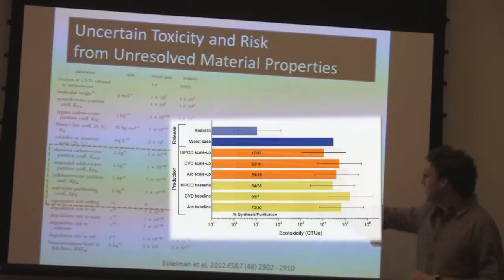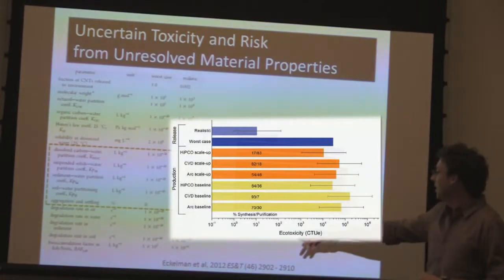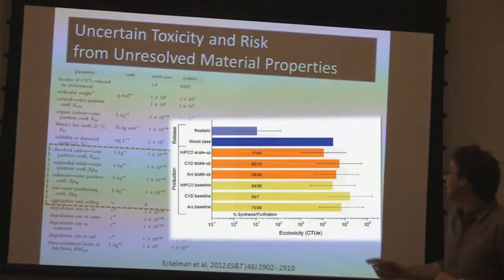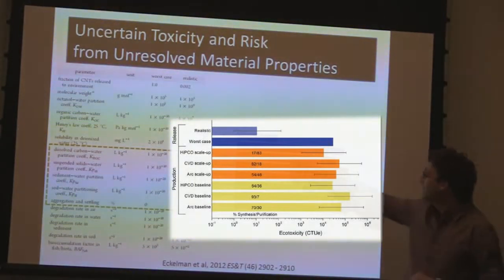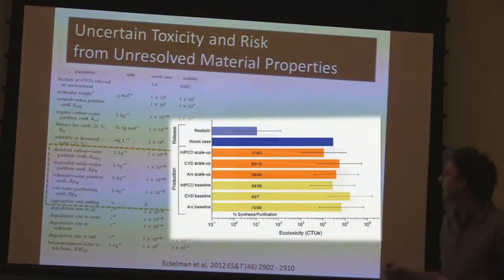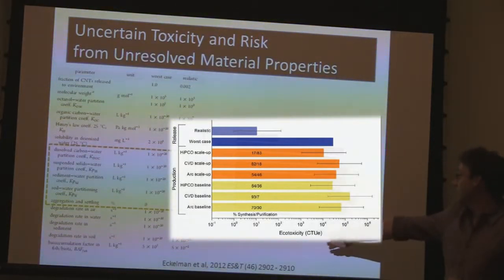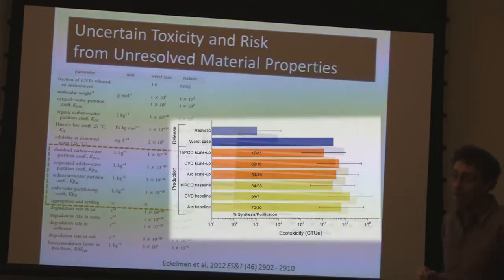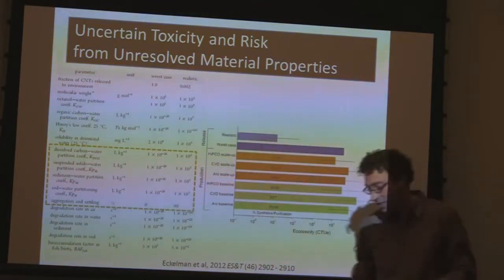Toxicological uncertainty is driven by a lack of certainty about basic material properties. A paper that used existing fate and transport models applied to carbon nanotubes in a bounding approach found that uncertainty spans more than 20 orders of magnitude. The results likewise have a realistic and worst-case scenario that vary by orders of magnitude on a log scale.